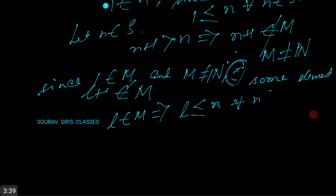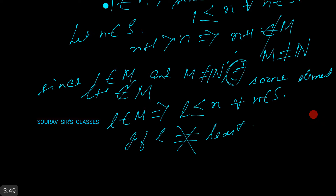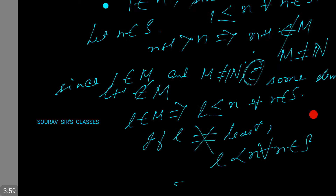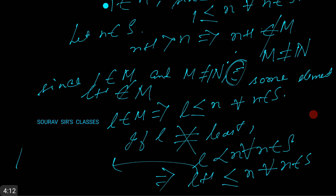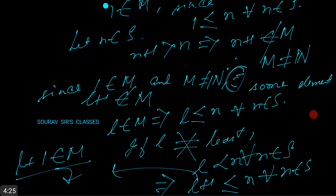If l is not the least element, then l is less than some element n where n belongs to S. This shows that l plus 1 belongs to M, which is in fact a contradiction, because we have already established that n plus 1 does not belong to M.